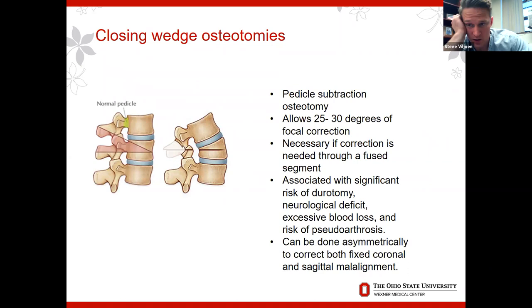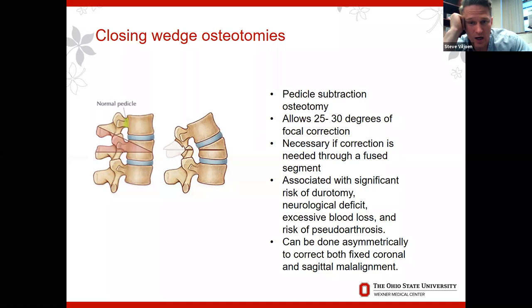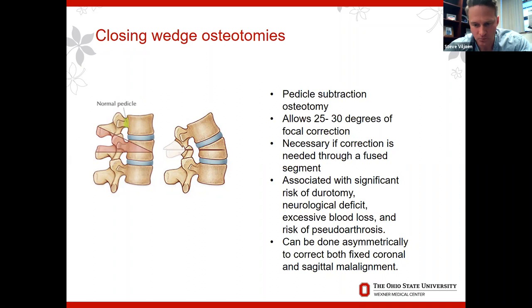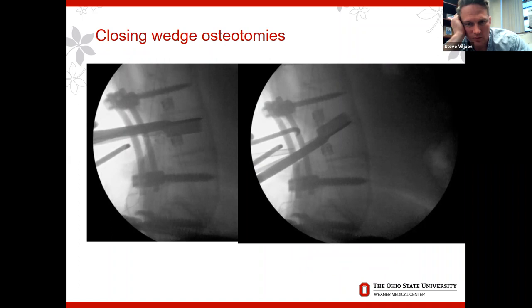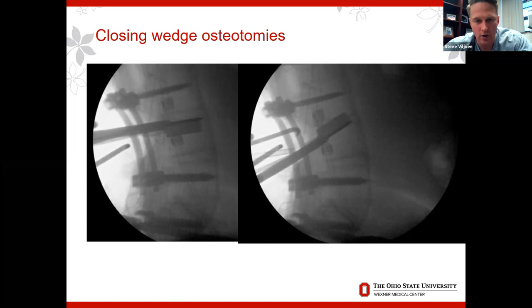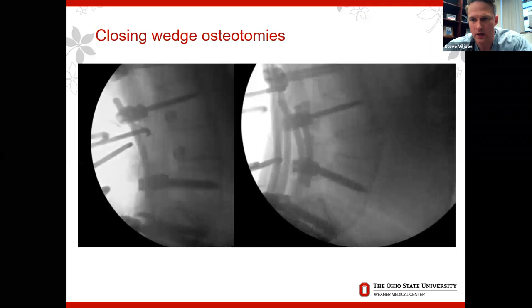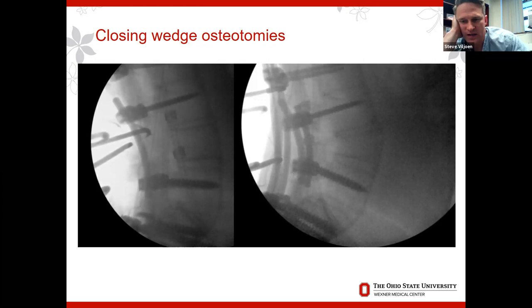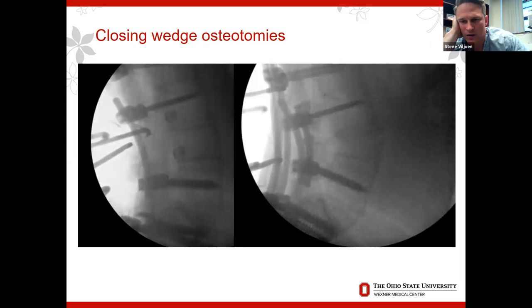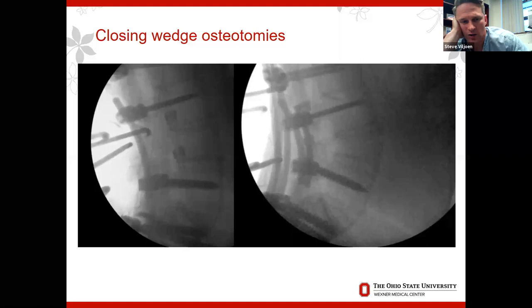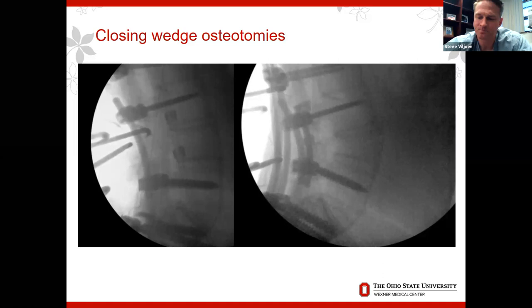In terms of how we achieve correction in these cases, it's typically closing wedge osteotomies or pedicle subtraction osteotomies. In the lumbar spine, a PSO typically allows about 30 degrees of correction. There are risks of dural tear, pseudarthrosis, and excessive blood loss. Can be done asymmetrically. There are some fluoroscopy shots of a lumbar PSO with a temporary rod on either side, doing the osteotomy with an osteotome. With AS cases these are sometimes harder to close — the anterior longitudinal ligament is usually quite hard to crack — and takes more effort than an iatrogenic flat back PSO.